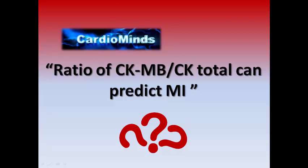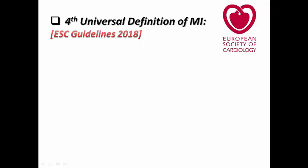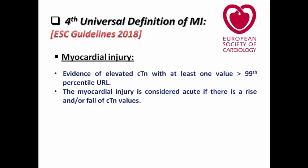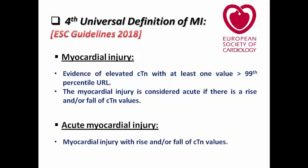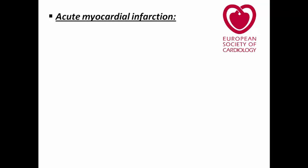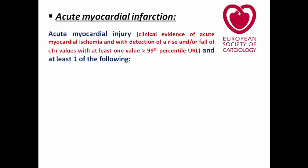Is that true or false? We recall the fourth universal definition of MI in the ACC guidelines 2018. It defined myocardial injury as evidence of elevated cardiac troponin with at least one value above the 99th percentile, considered to be acute injury if there is a detectable rise and/or fall in cardiac troponin values. Acute myocardial infarction itself is defined as acute myocardial injury with at least one of the following criteria.